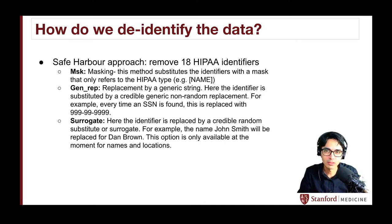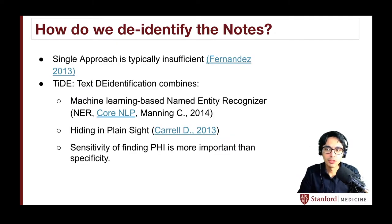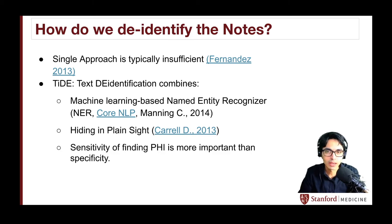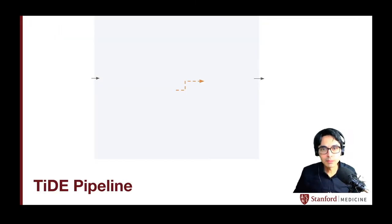Details of this method, called Hidden in Plain Sight, will come in a few slides. A single approach is typically insufficient, and that is why our text de-identification pipeline, TIDE, combines machine learning to identify named entities and locations, combined with Hidden in Plain Sight — a surrogate replacement strategy — and in this case we are striving for sensitivity. How does this TIDE pipeline work?